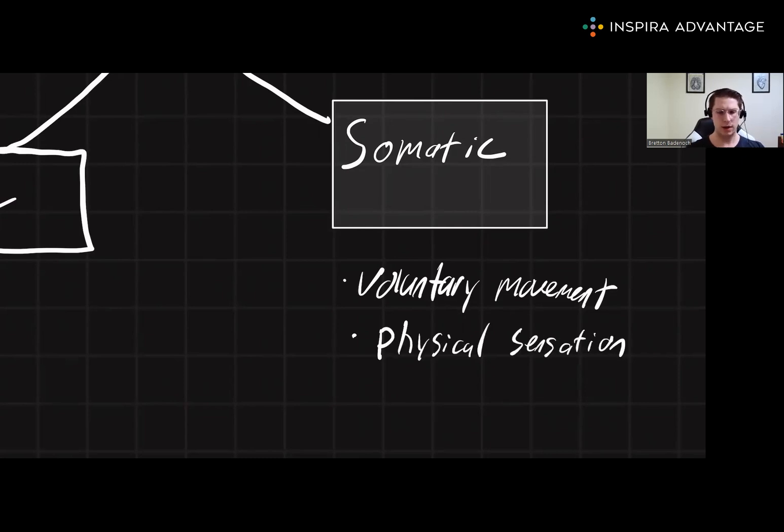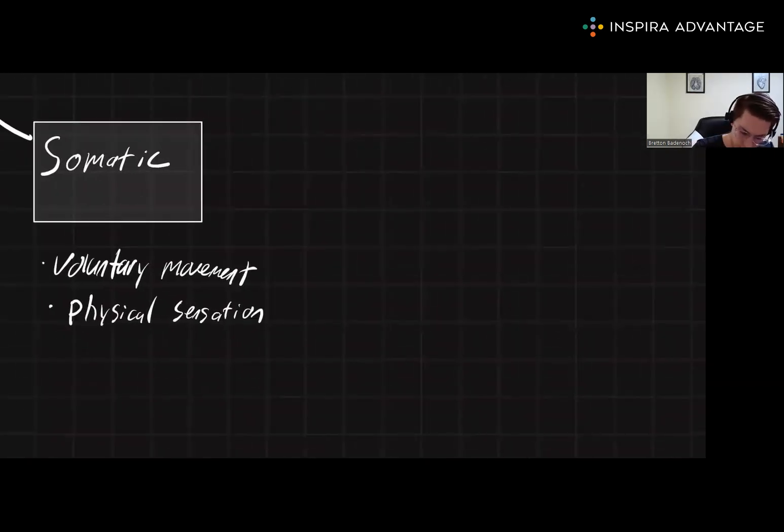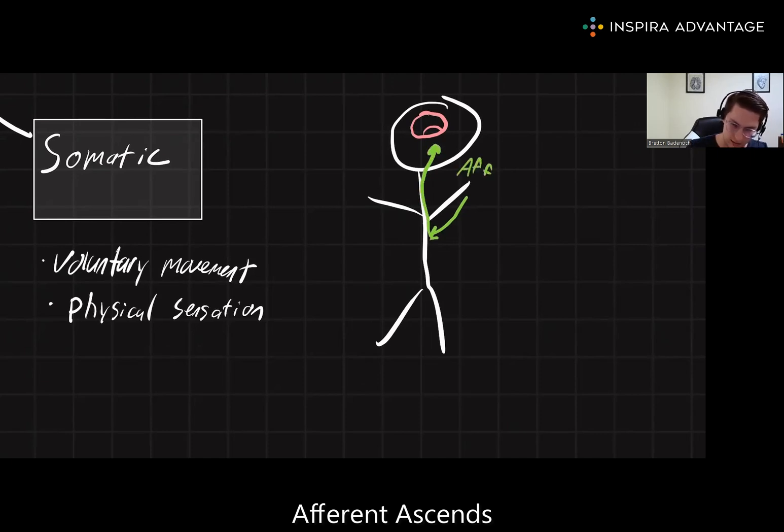There are two classes of neurons we want to be aware of here: afferent and efferent neurons. Afferent sensory neurons ascend the spinal cord to the brain so that the brain can process information coming in. So if we sketch a little diagram here, if we've got a head, we've got a brain in here, an afferent neuron is going to send information into the spinal cord up to the brain. Afferent ascends.